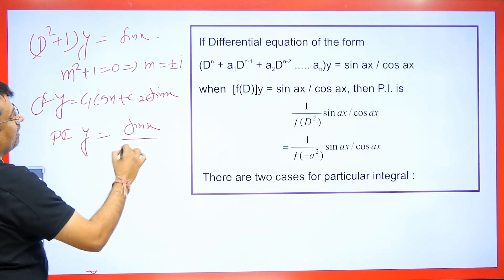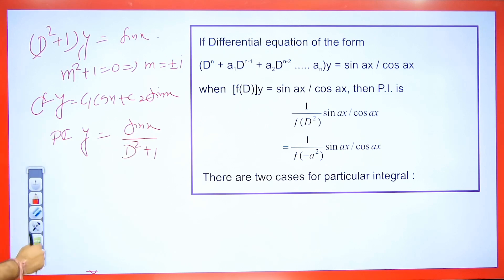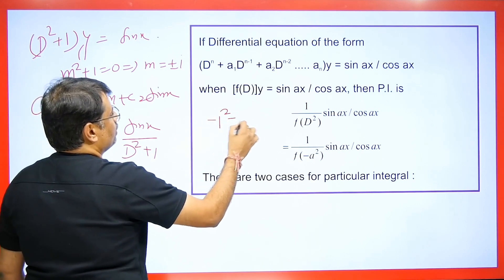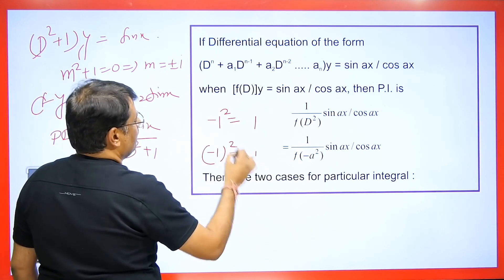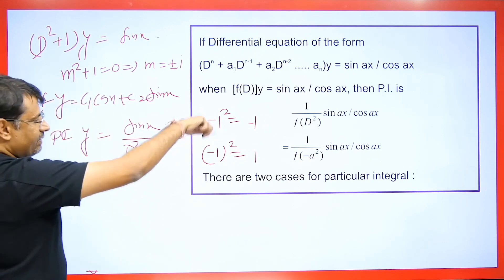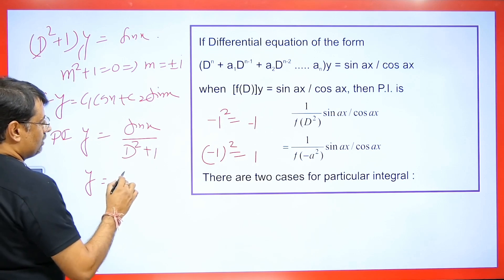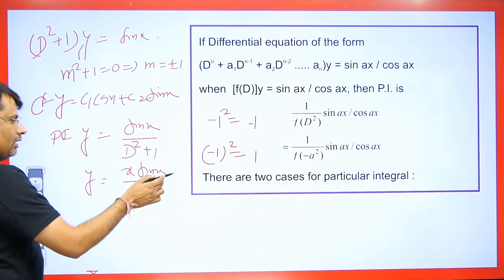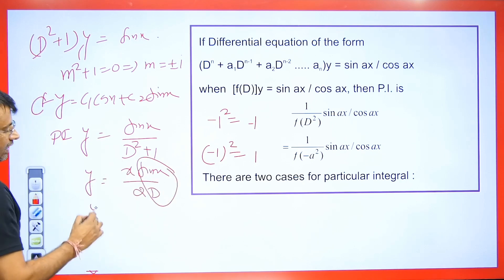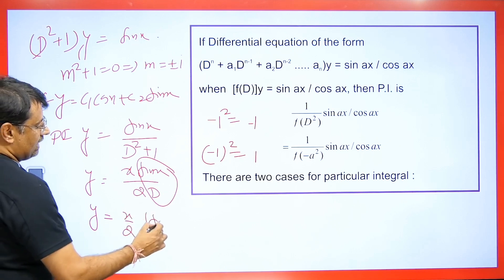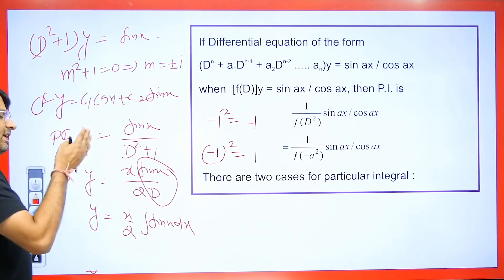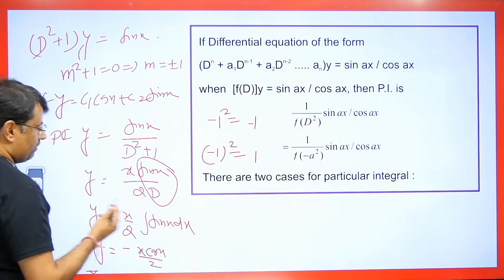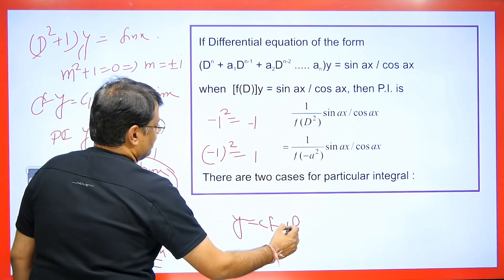For the PI: y = sin x / (D² + 1). Wherever it is D², we square 1, giving −1 + 1 = 0. Note that square of −1 is +1, but here it is −1 placed in, so minus 1 + 1 = 0. When the denominator is 0, we multiply by x in the numerator and differentiate in the denominator. Since 1/D means integration, we write x/2 and integrate sin x, giving −cos x/2. The final answer is CF + PI.